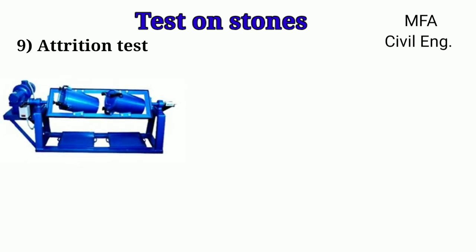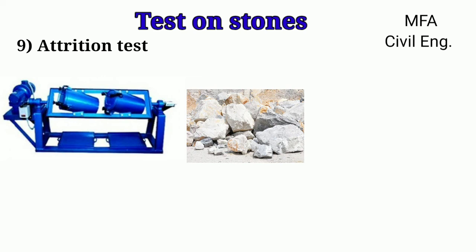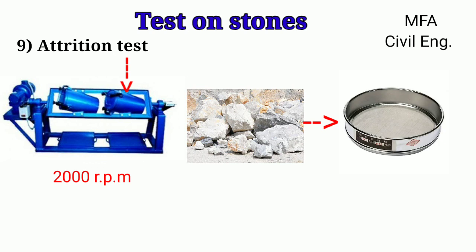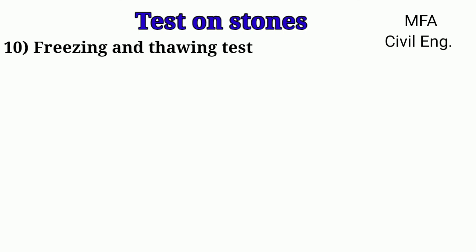Attrition test: This test is used to assess the ability of stones to withstand the grinding action of traffic. It is carried out in a Deval attrition testing machine. Broken stones of about 5 to 6 cm size are weighed and placed inside an iron drum inclined at 30° to the horizontal, revolving at 2000 revolutions per hour. After five hours, stones are taken out and sieved through a 2 mm sieve. The retained stone pieces are weighed. The loss in weight must not exceed 2% for good stones. Percentage attrition = ((W1 − W2) / W1) × 100, where W1 is the initial weight and W2 is the final weight.